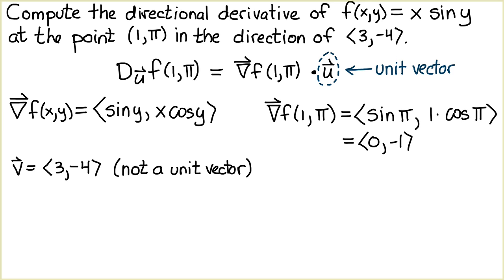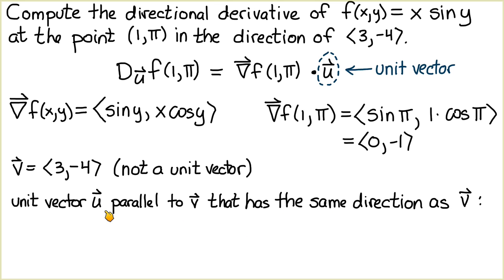So let's call this the vector v. What we need is a unit vector u that's parallel to v that has the same direction as v. And recall that u equals v divided by the magnitude of v, which is equal to the vector ⟨3,-4⟩